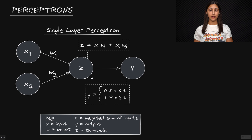Once this input is received by the node, we calculate the weighted sum of the input features. We simply multiply X1 by weight one, and then add that to the product of X2 by weight two. This weighted sum is labeled Z, and Z is the output value of this node.